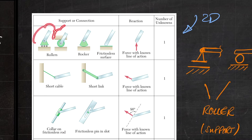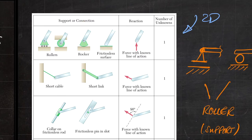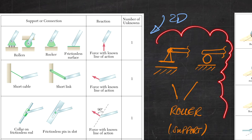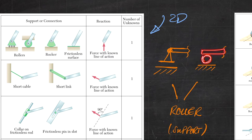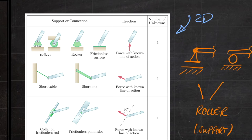If you have a support like this, we call these rollers. They can be shown in different ways — sometimes as a little ball underneath, sometimes with a small vertical gap between the ground and the support. In different books you may see different notations for rollers. The important thing is that a roller gives you only a force in the vertical direction. Rollers cannot fix the body in the horizontal direction — the body can slide or move horizontally.